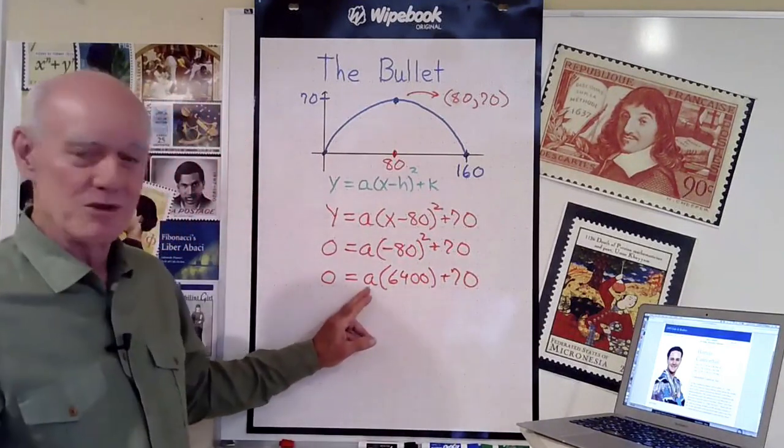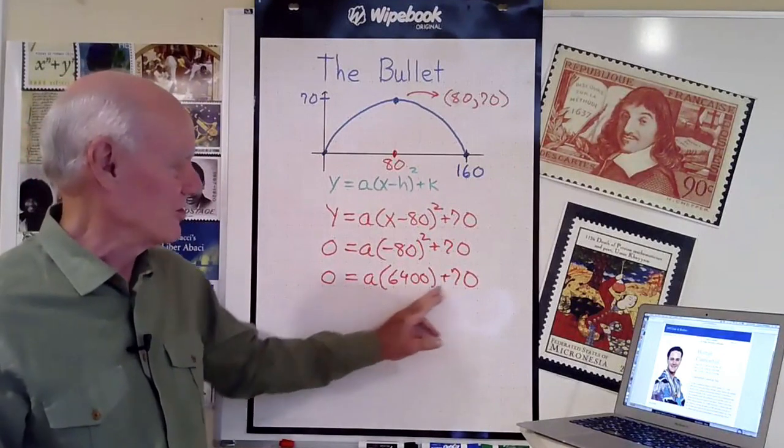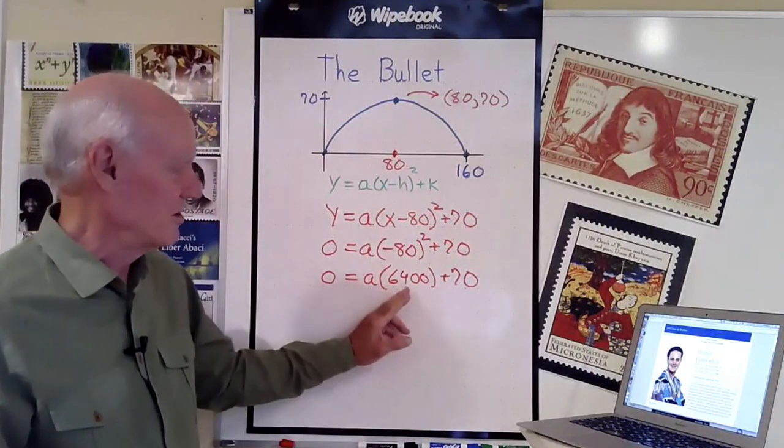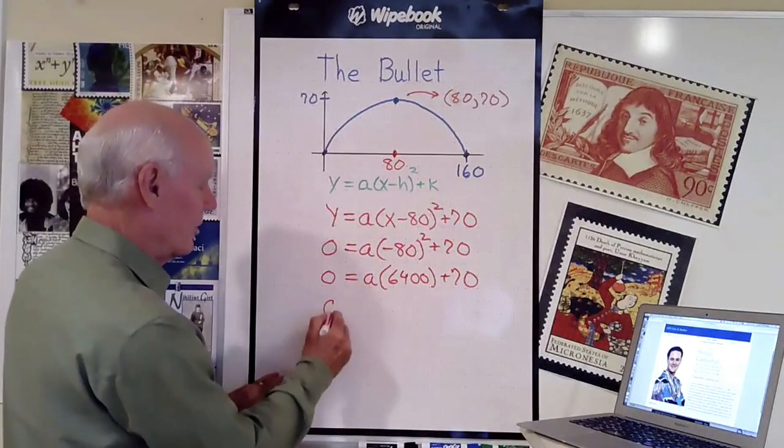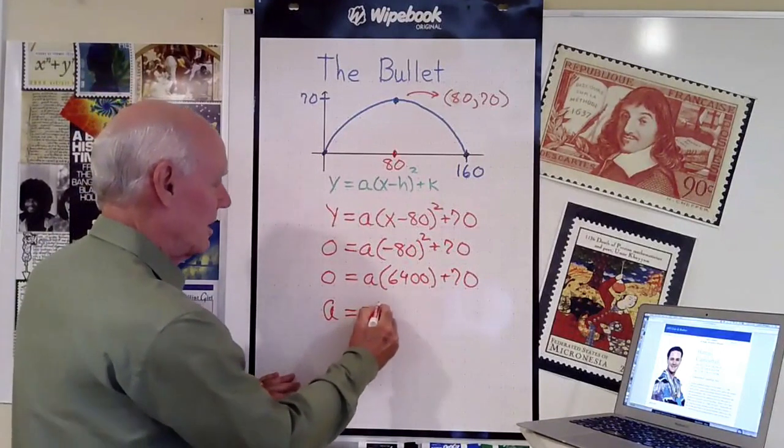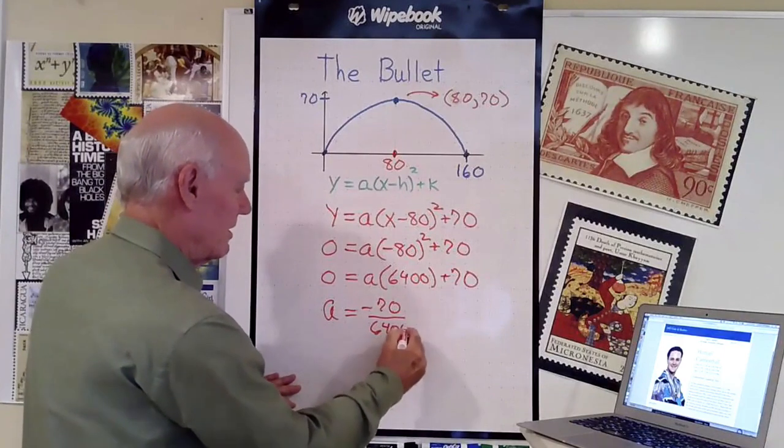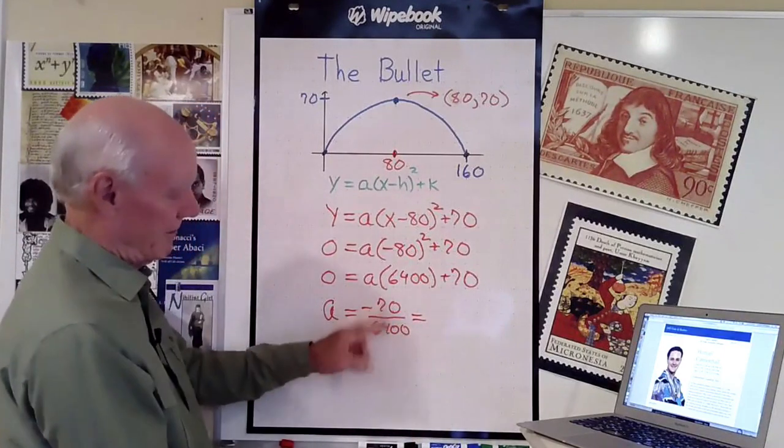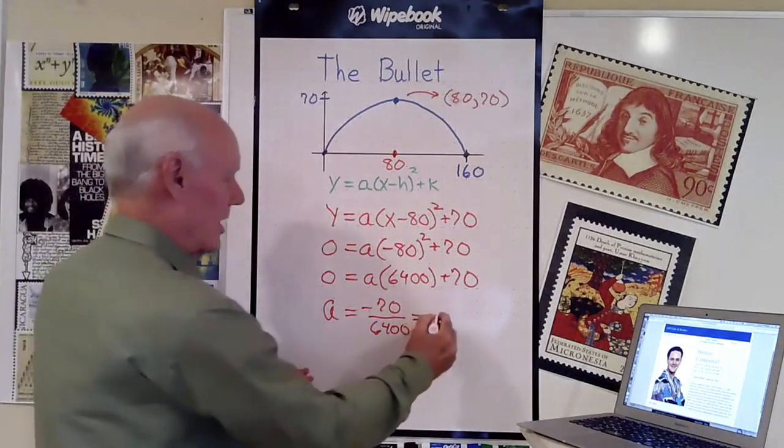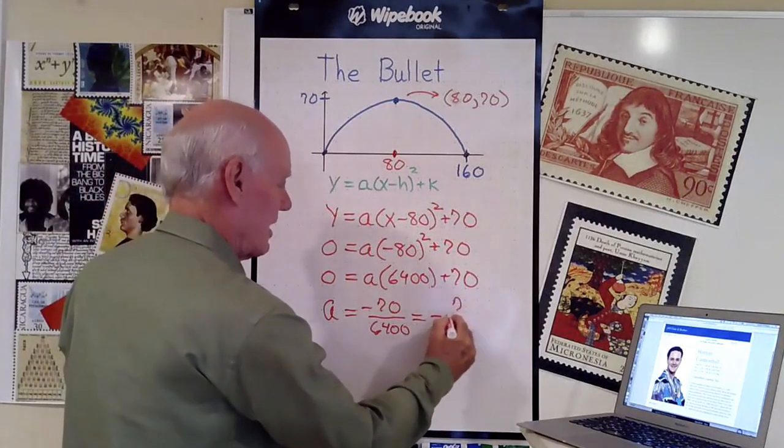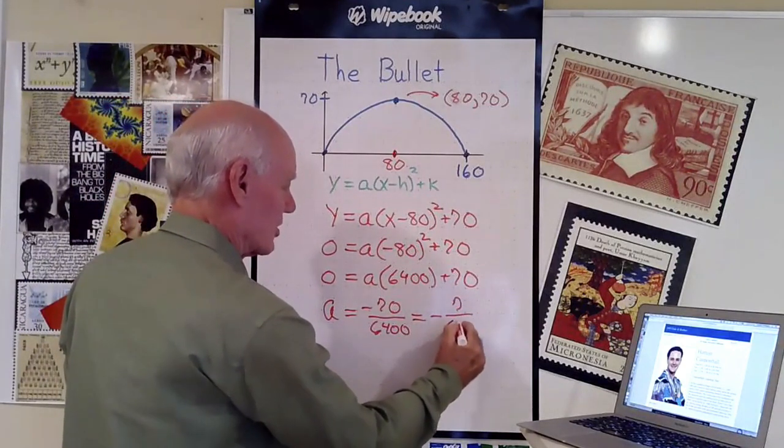Now I solve this equation for a. I'll subtract 70 from both sides, divide by 6400. I end up with a equals negative 70 divided by 6400. I'll reduce that by dividing both numerator and denominator by 10, so negative 7 over 640.